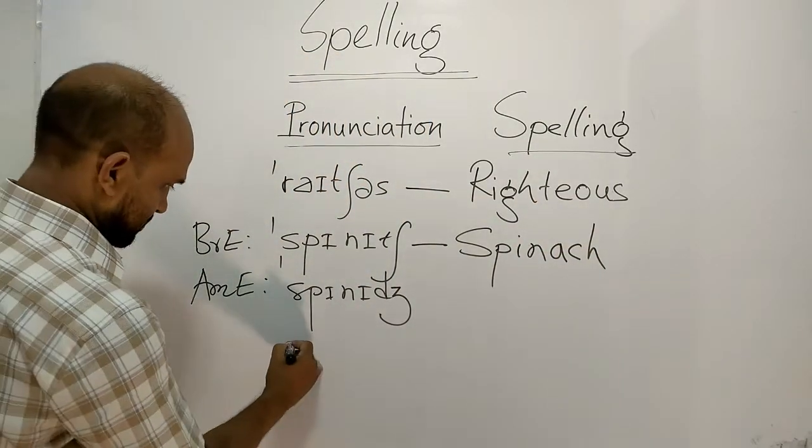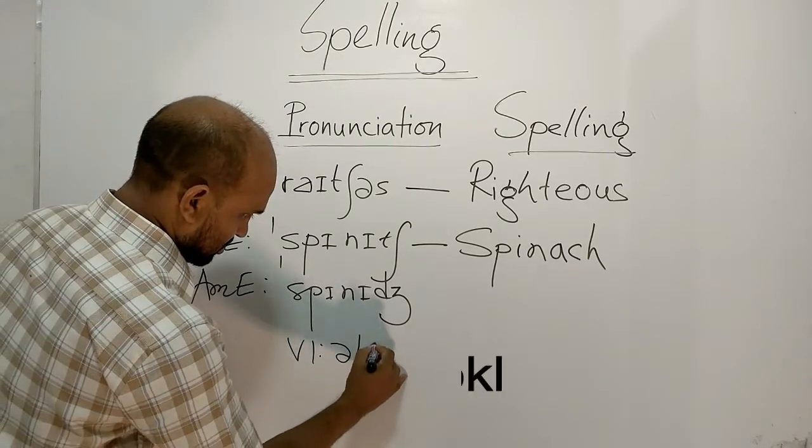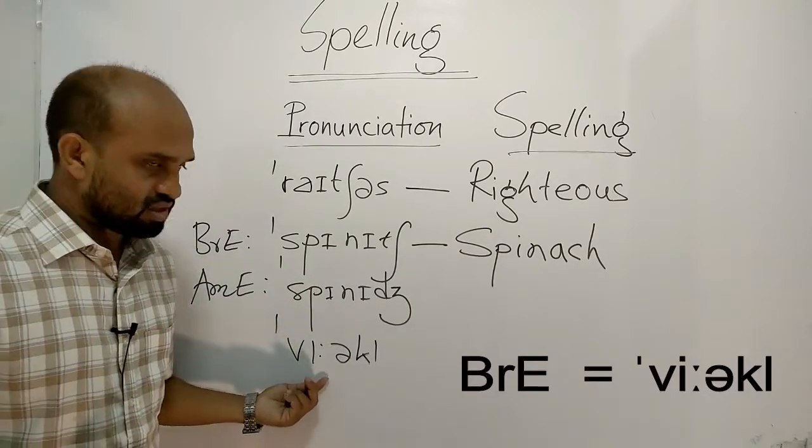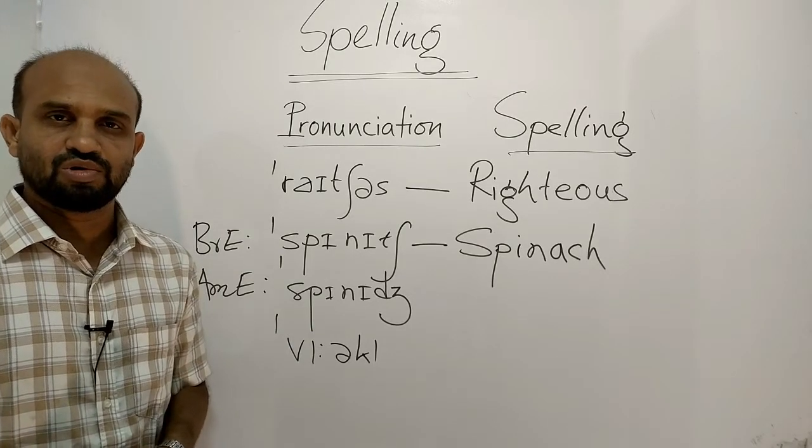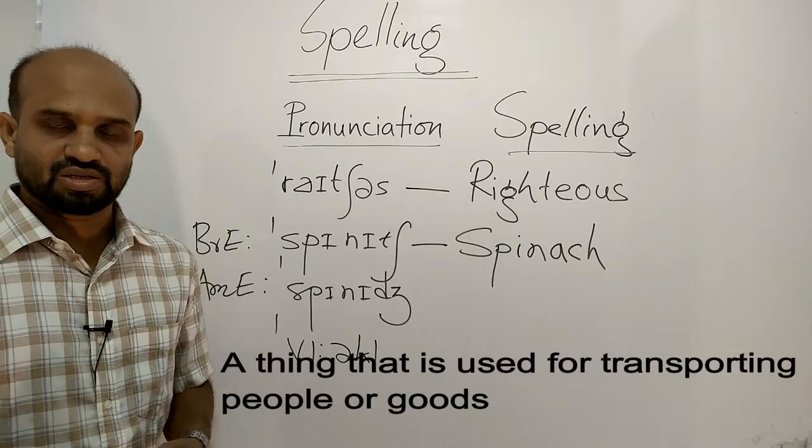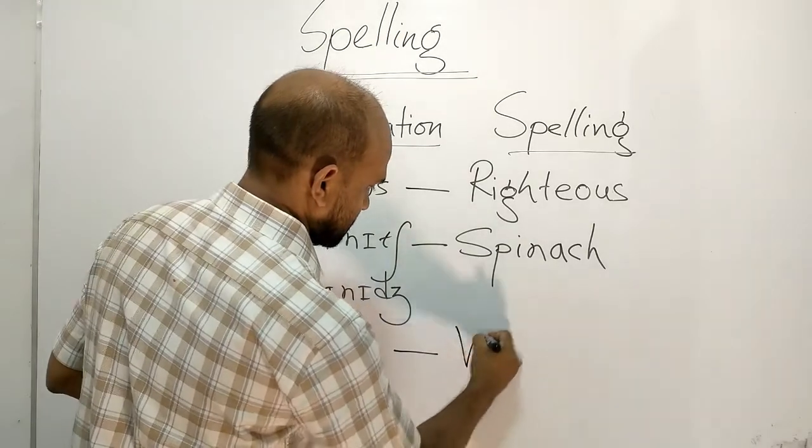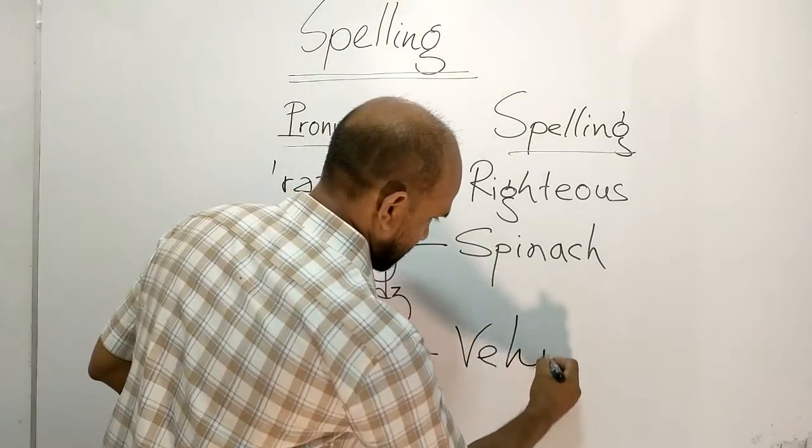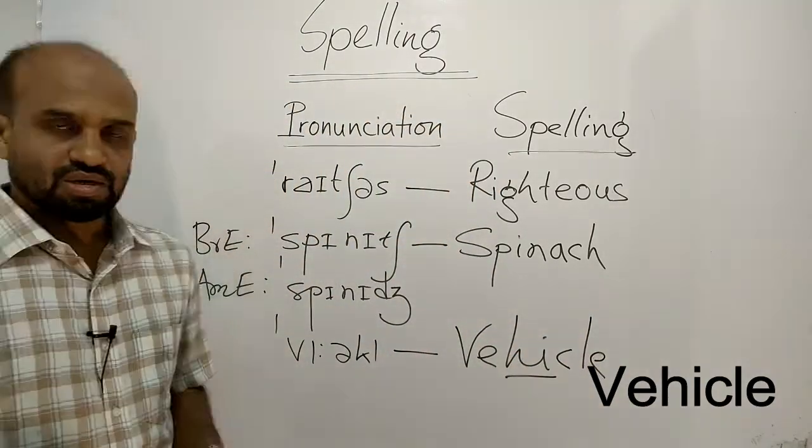Next one is vehicle. A thing that is used for transporting people or goods from one place to another such as lorry, bus, etc. Spelling is V-E-H-I-C-L-E. These two letters remain silent.